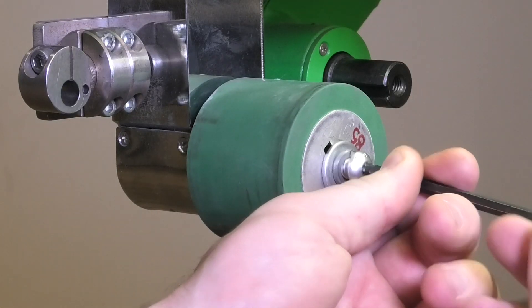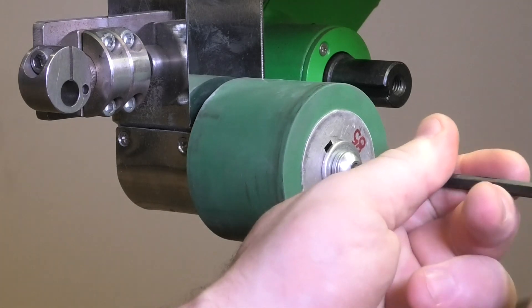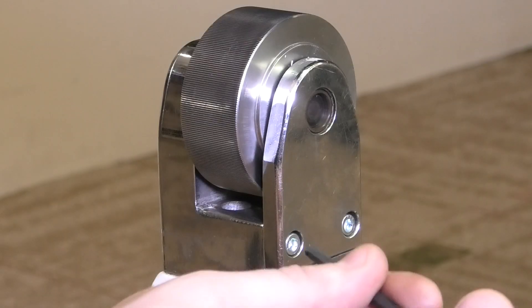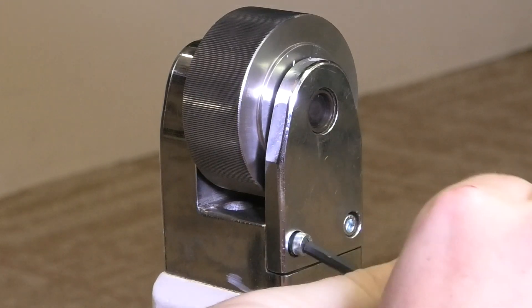Screw that bolt in nice and tight and there's a few more steps for the lower than the top but we're going to start off by taking out the bottom two bolts.